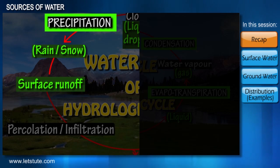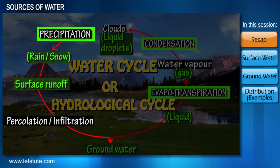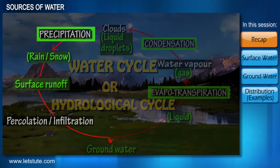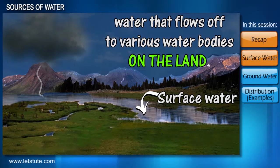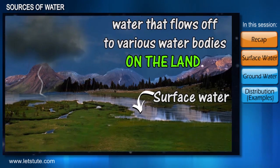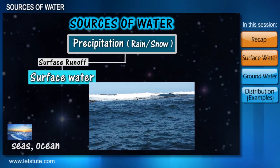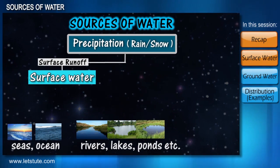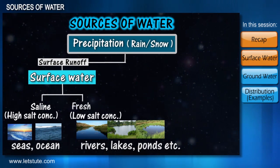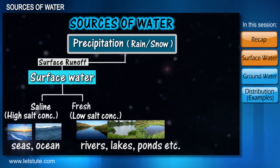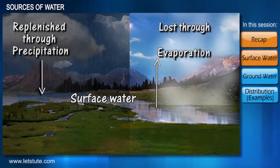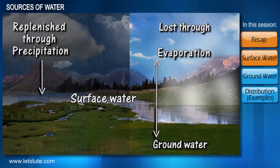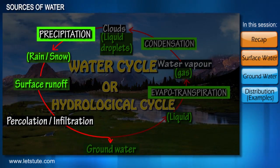Rain and snow that falls on the earth either ends up as surface runoff or infiltration. Surface runoff is the water that flows off to various water bodies on the land to form surface water. Examples of surface water include seas, oceans, rivers, lakes, ponds, etc. It can be saline water or fresh water. These surface waters are naturally replenished through precipitation and lost through evaporation.